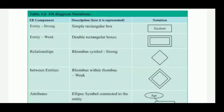The second entity type is weak entity. A strong entity uses a single rectangle box. For a weak entity, we use double rectangular boxes. That is the symbol for a weak entity.